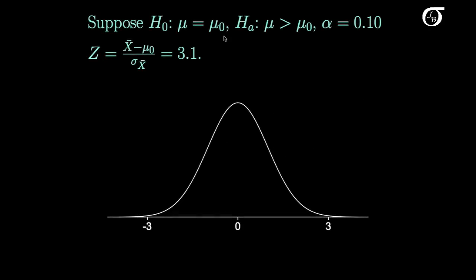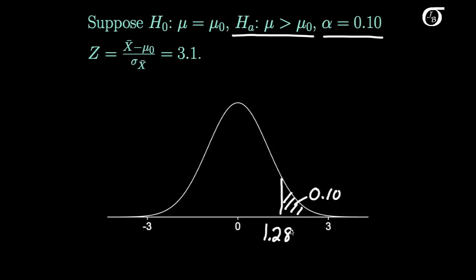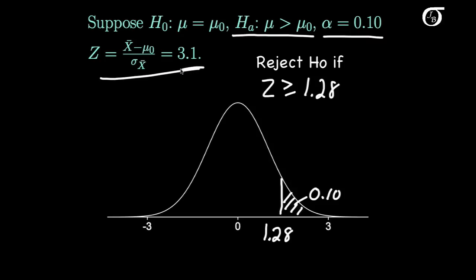Let's look at a few examples. If our alternative hypothesis is that mu is greater than mu0 and alpha is 0.10, we put that entire 0.10 in the right tail. The Z-value that makes that happen is 1.28. So we reject the null hypothesis in favor of this alternative at alpha of 0.10 if the observed Z-value is greater than or equal to 1.28. If we observe a Z-value of 3.1, which falls in the rejection region, we can reject the null hypothesis at alpha of 0.10.